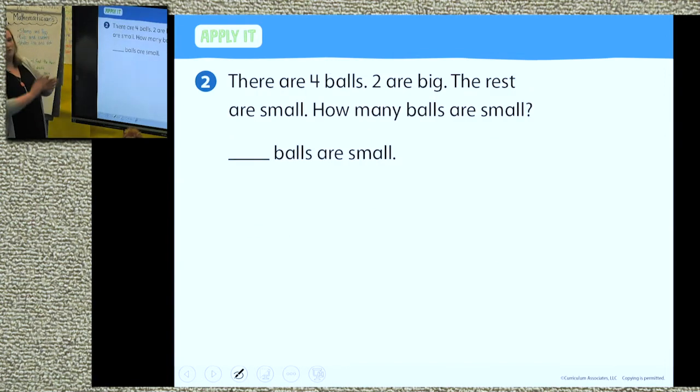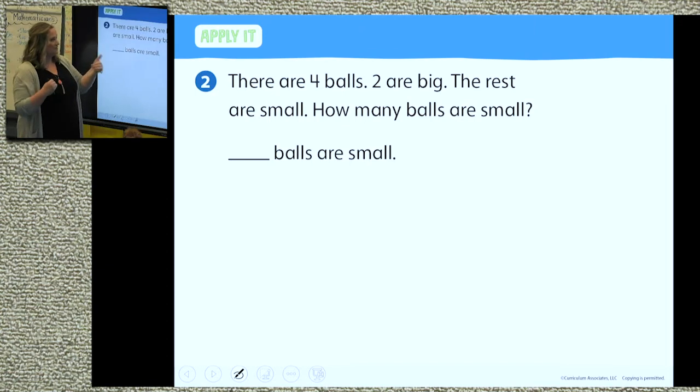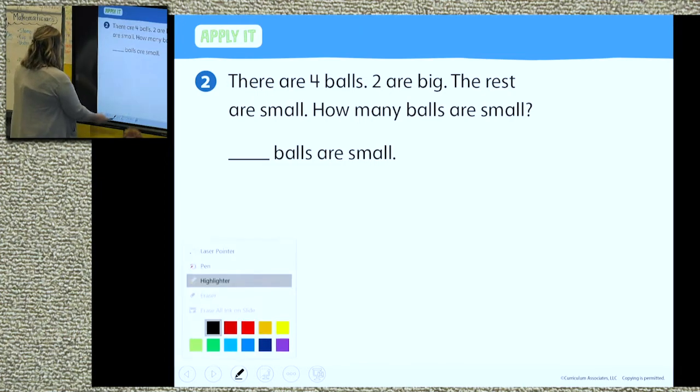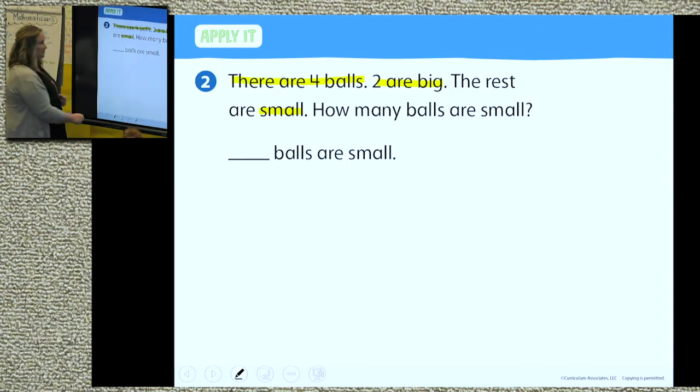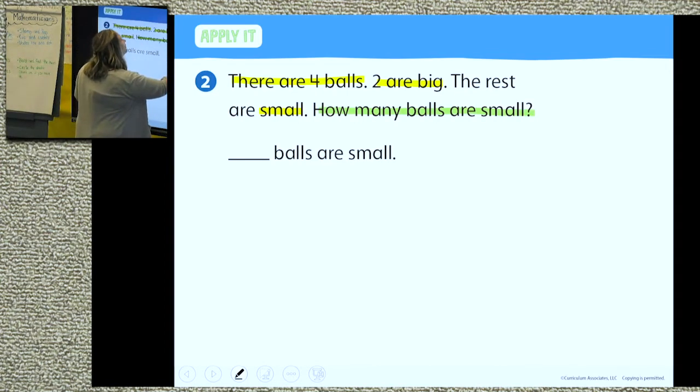You ready? Go on to the next one. Ooh, tricky. No pictures. There are four balls. Two are big. The rest are small. How many balls are small? This one's tricky. Let's figure out what we know. What's happening? There's balls. Two of them are big and some of them are small. What information is important? That there are four balls. What else is important? Two are big and some are small. What are we trying to figure out? What is it wanting us to figure out? What's our question? How many balls are small?